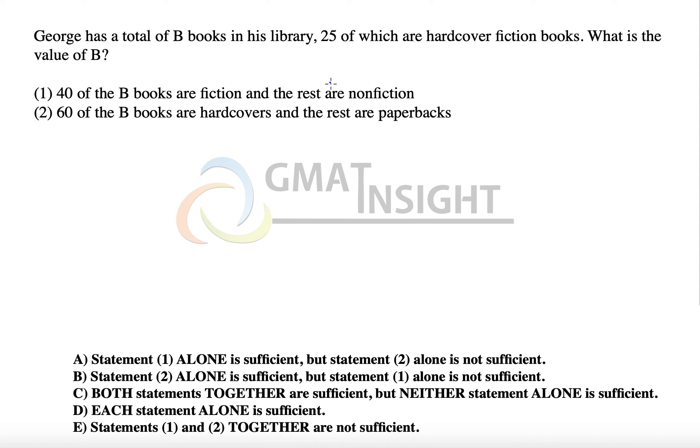George has a total of B books in his library, 25 of which are hardcover fiction books. What is the value of B? So he has B books in his library, there are 25 which are hardcover fiction books. There are some books probably which are hardcover, some are not hardcover, some are fiction and some are nonfiction.